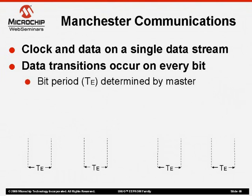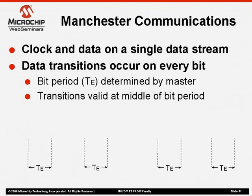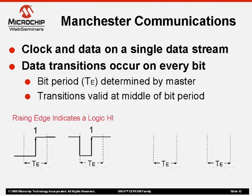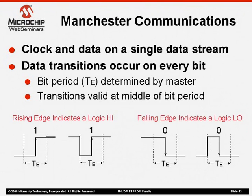As an example, take a look at the diagram below where we are showing the bit period TE. This period will support the UniO frequency range and is controlled by the master, and the transitions are only valid at the middle of the bit period. A logic high is generated by sending a rising edge in the middle of a bit period, and a logic low is generated by sending a falling edge. Any adjustments to the signal can be made at the edge of the bit period, since the middle of the period is reserved for the actual Manchester data.